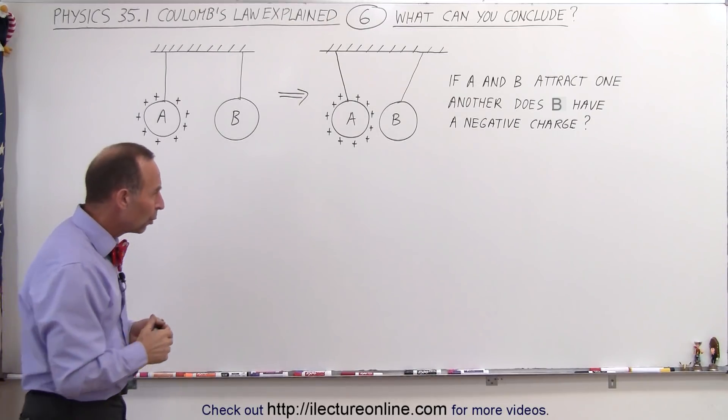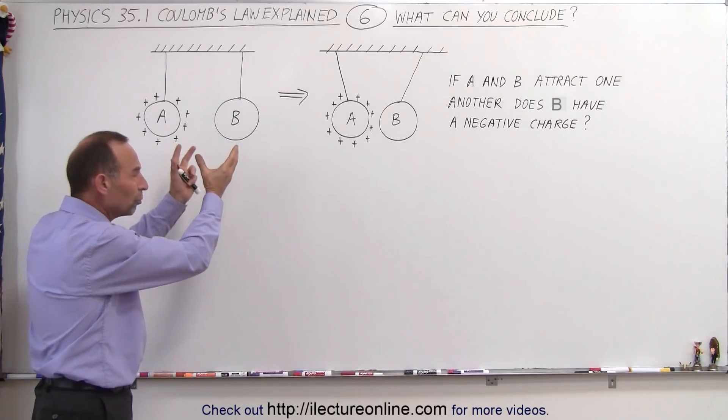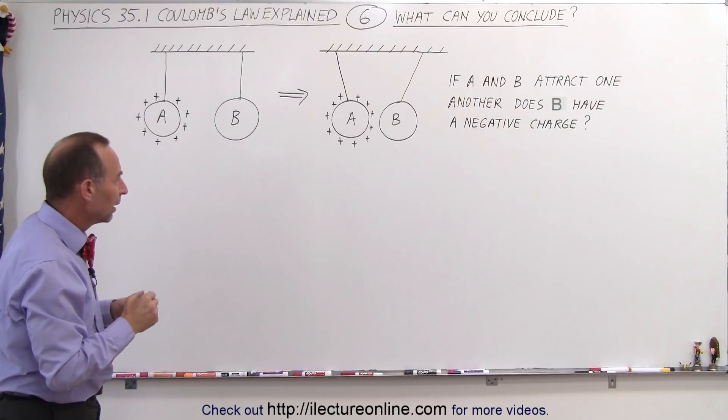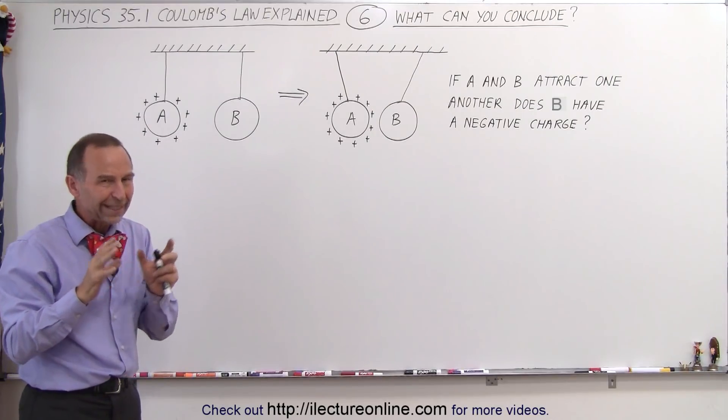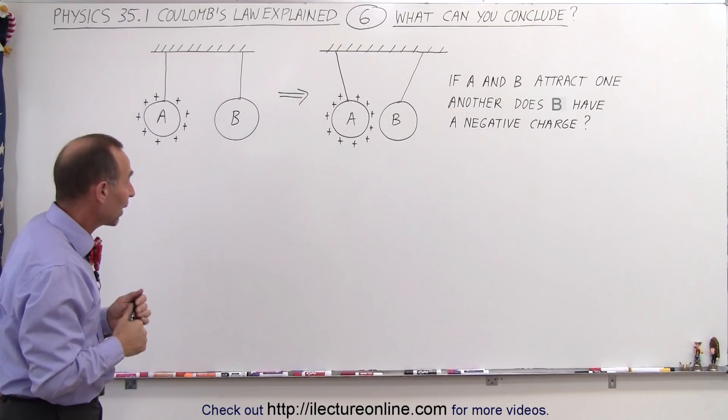Why not? Well, if B is a conductor and it's neutral, meaning it has the same number of positive and negative charges on it, but since the charges, and of course in real life, the negative charges could move through the conductor rather easily,